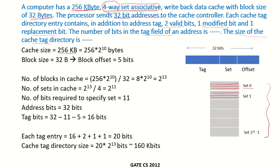The cache size is 256 kilobytes. Converting this into bytes gives us 256 into 2 to the power of 10. The block size is 32 bytes, so to specify any offset within a block — that is, a particular byte within a block — we will require 5 bits. So within a block, if we want to address a particular byte, we use 5 bits for that offset.